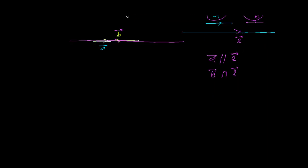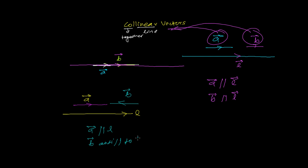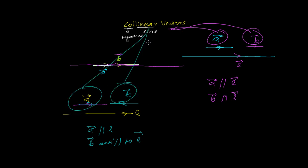Now here both are parallel, but one may be anti-parallel to another. If this is line L and I have vector A going in one direction, and vector B is oppositely directed, then vector A is parallel to L but vector B is anti-parallel to L. Whether a vector is in the same direction to the line or opposite to it, you can still say vector A and vector B are collinear vectors.